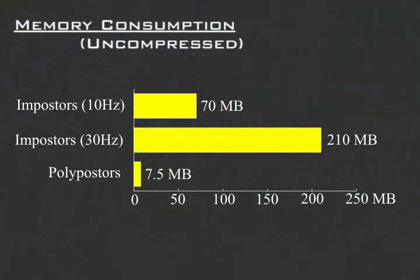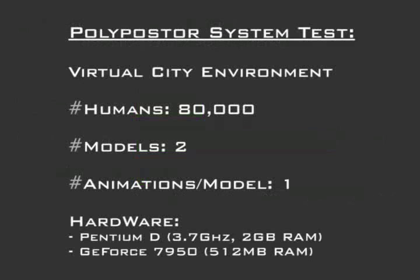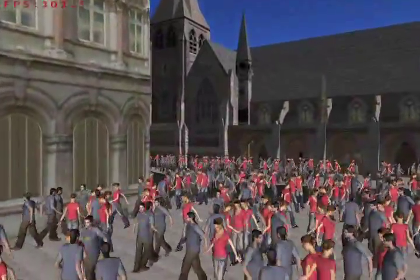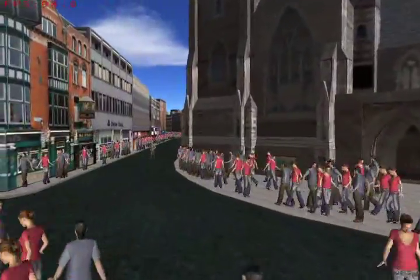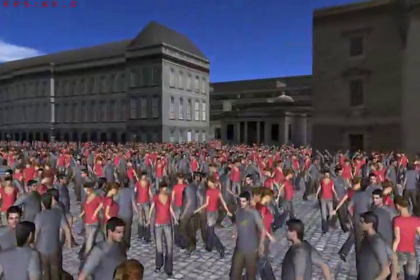This graph, showing the memory consumption for each system, clearly illustrates the memory savings achieved by using polyposters. To test the performance of polyposters, 80,000 pedestrians were animated and rendered in a large-scale virtual city model.